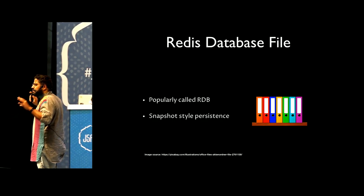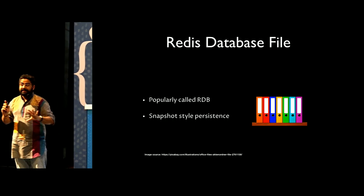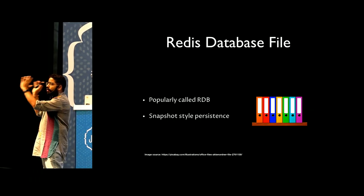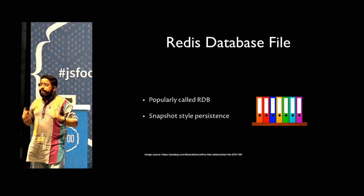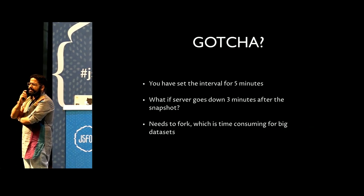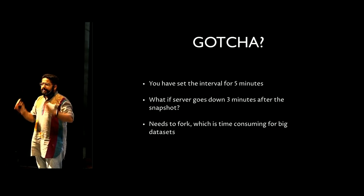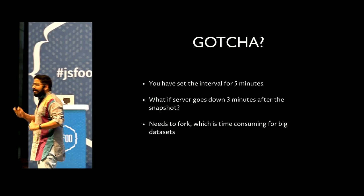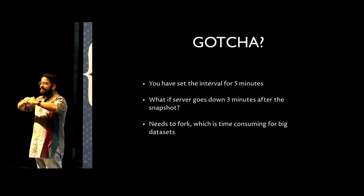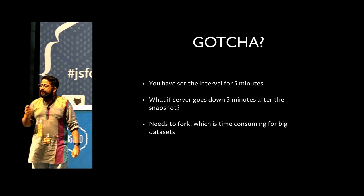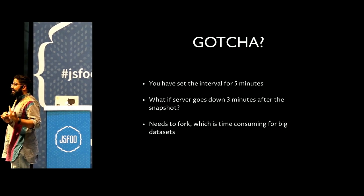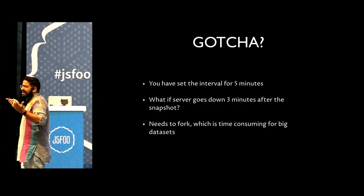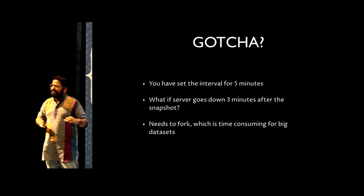The most basic persistence is RDB - Redis Database File. It takes a snapshot of your whole Redis instance and makes it into a database file, which can be retrieved. But there are gotchas. RDB works in five-minute snapshot slots. Imagine at the third minute your Redis goes down - all the data from those three minutes is gone because the last backup was three minutes ago. So in these kinds of scenarios, RDB is not the best solution. But if your data doesn't change that frequently, RDB is a fairly decent persistence solution.